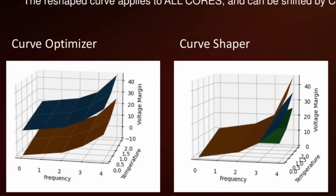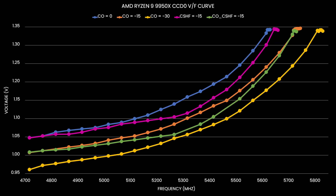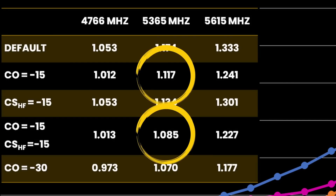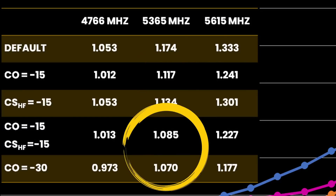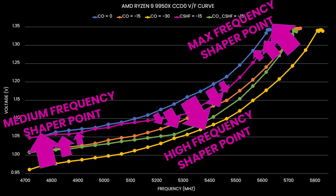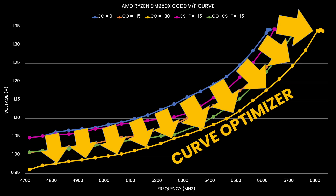One final piece of the Curve Shaper puzzle is that it stacks on top of Curve Optimizer, meaning we can combine both tools to fine-tune the voltage-frequency curve. Comparing five different curves, we can make two key observations: first, Curve Shaper indeed adjusts the VF curve beyond the Curve Optimizer, confirming the two settings stack. Second, Curve Optimizer is the more impactful of the two tools, providing a larger voltage offset across the entire curve. You can think of Curve Optimizer as setting all the shaper points to the same magnitude, pulling them all in the same direction.